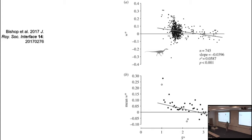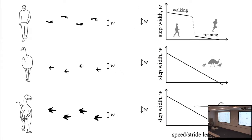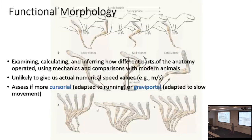So even non-avian dinosaurs would have gone from a slow walk to a medium walk to a fast walk — speed walking, power walking — to a run, without a mammalian-style distinct gait transition.